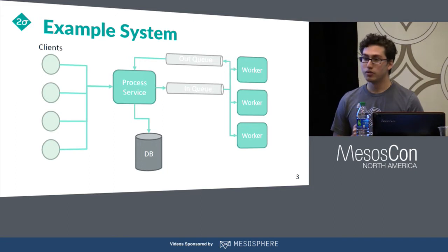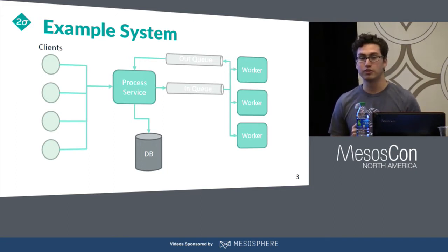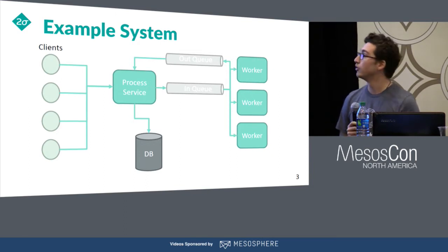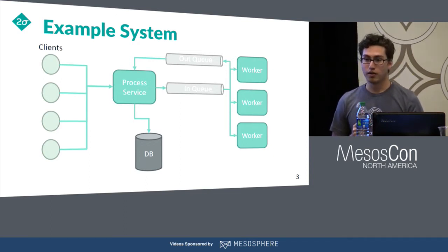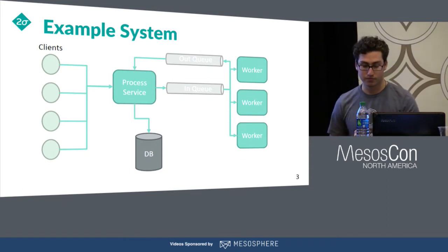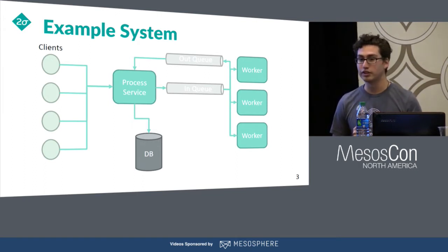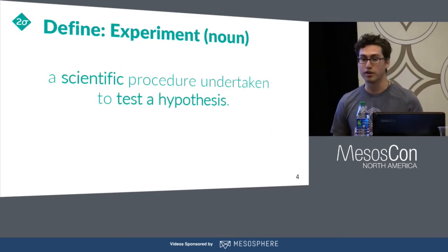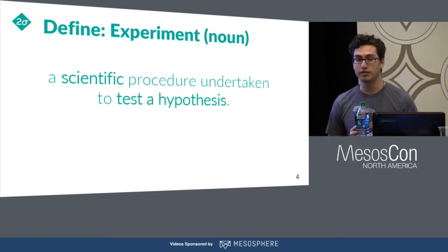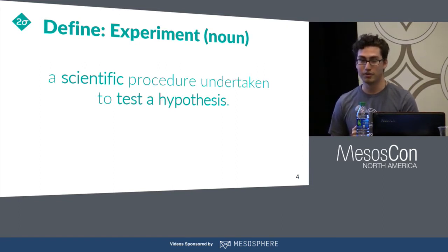We have this case where we want to test a hypothesis — that's really what these questions boil down to. If I add more workers, my hypothesis is that I'll be able to scale out linearly. But we don't have a way to experiment with our system. We can put it in production, but our production system isn't really a controlled environment. What I mean by experiment is a scientific process to test a hypothesis. We can have a hypothesis and test it in production, but it's not really scientific.